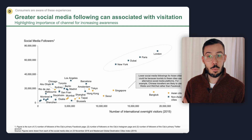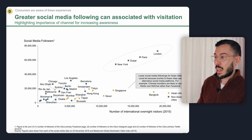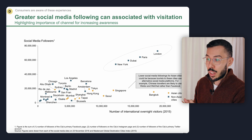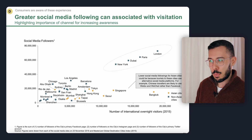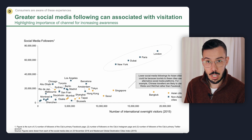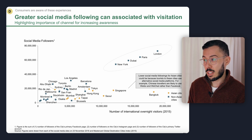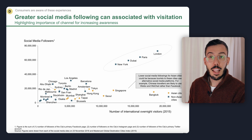Here's another BCG slide from the Melbourne as a Cultural Destination project. It features a scatter plot with social media followers on the y-axis and the number of international overnight visitors on the x-axis. The point being made is that as social media followers increase, overnight visitors also increase. They've circled four cities — New York, Dubai, Paris, and London — which have both a large number of social media followers and a large number of overnight visitors. That is a relationship.